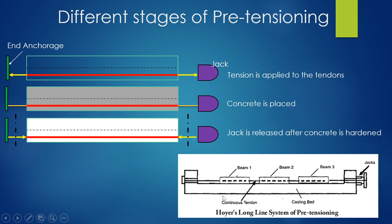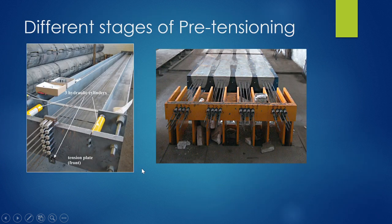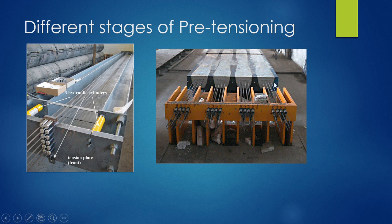Here are pictures showing hydraulic jacks being used. The mold is empty at this stage and concrete will be placed afterwards. The steel has been tensioned, and once concrete is placed and hardened, the steel wires are cut.